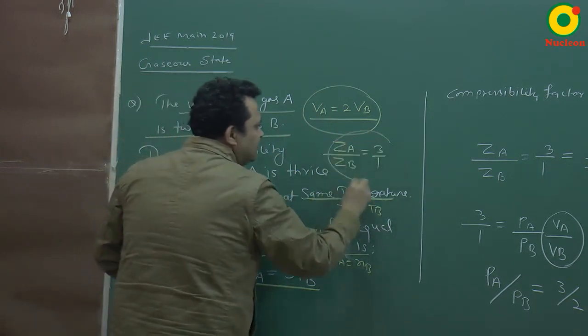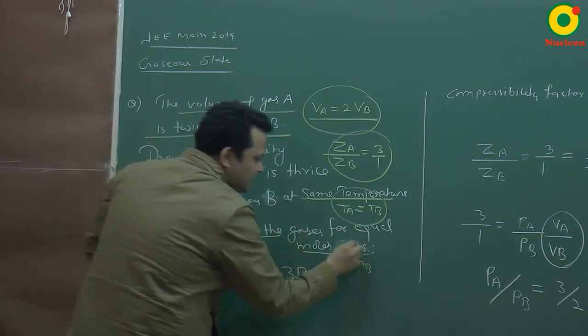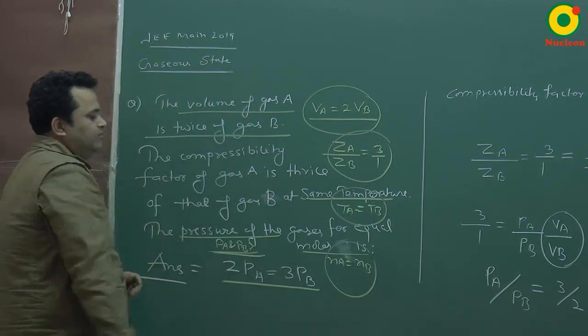So the volume of gas A is twice of gas B. This is the conclusion from the information. Compressibility factor is thrice of B. Same temperature is TA = TB. Equal mole is nA = nB. Relation is to find pressure A and B.